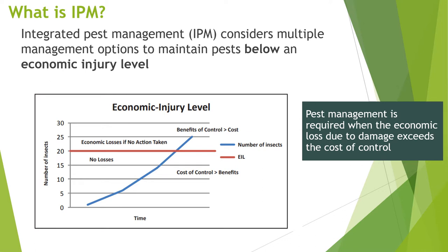Pest management is required when the economic loss due to damage exceeds the cost of that control. We also refer to the action threshold, because most management practices take some time to have an effect. So you want to implement them before you reach the economic injury level — the action threshold is lower than the injury level and is the point at which you need to act to prevent pest populations from reaching it.